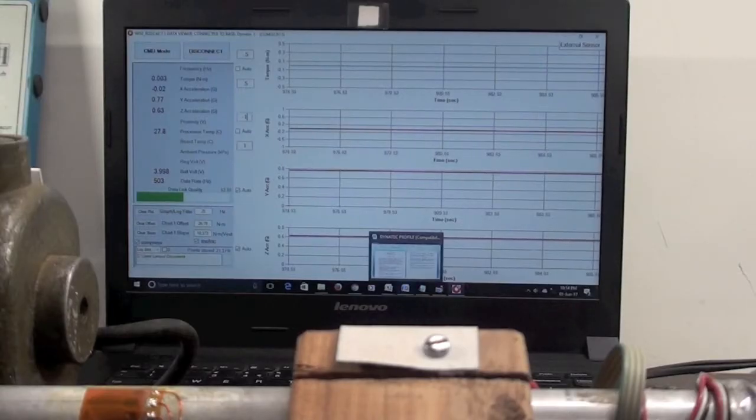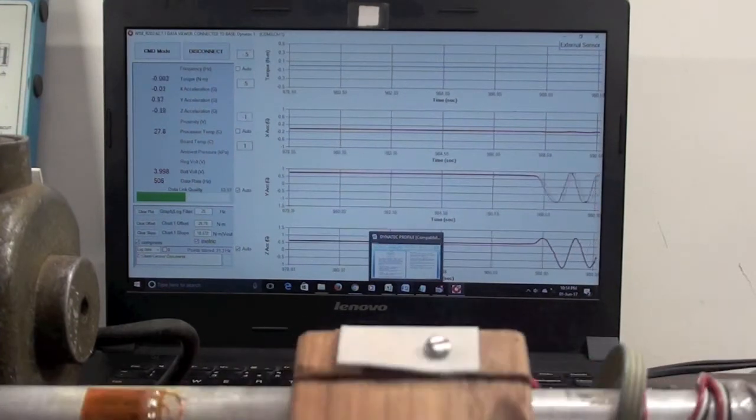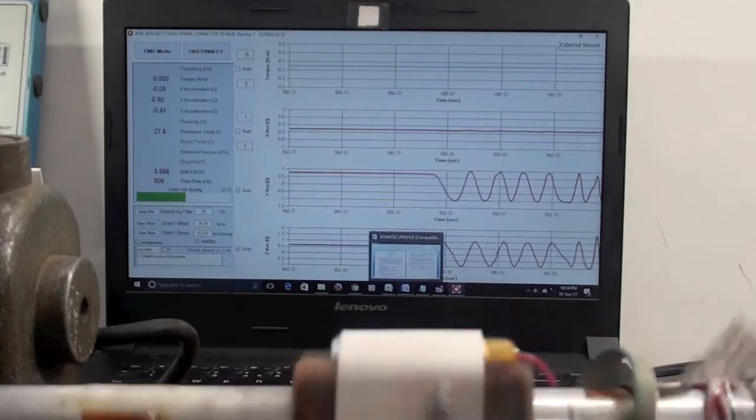The transmitter shown here also has three built-in accelerometers and the g-values in the x, y and z directions are displayed as red plots on the screen.